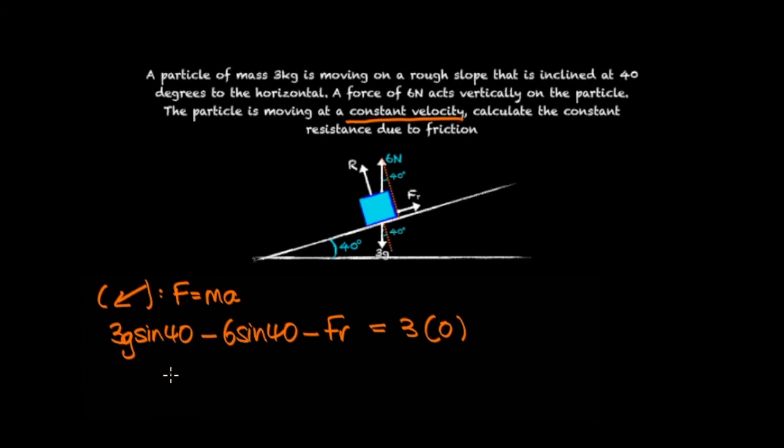So rearranging for friction is going to give us friction equals 3g sin 40 minus 6 sin 40 and that's equal to 15.0 newtons to three significant figures.